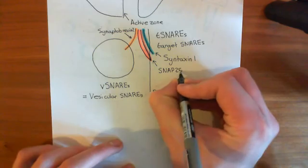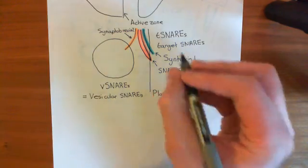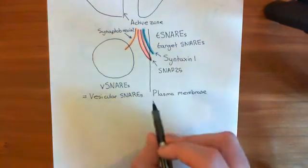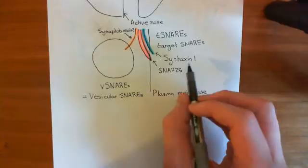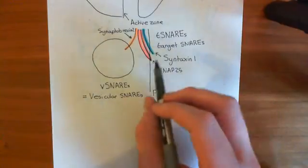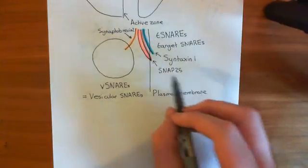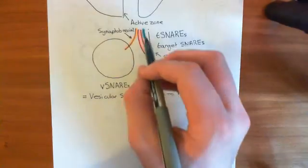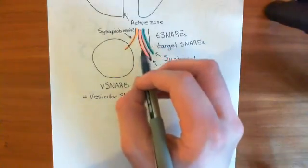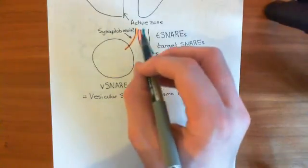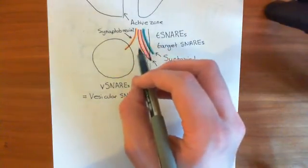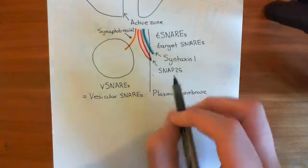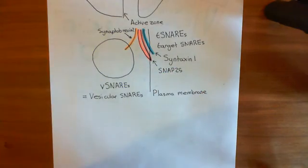What's going to happen is that initially in the plasma membrane, syntaxin-1 is going to form a complex with SNAP-25 — these three parallel alpha helices are going to bind together and intertwine, forming a complex of syntaxin-1 with SNAP-25.